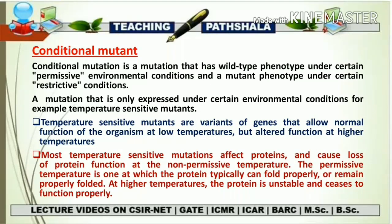Most temperature-sensitive mutations affect proteins and cause loss of protein function at the non-permissive temperature. The permissive temperature is one at which the protein can fold properly or remain properly folded. At high temperature, the protein is unstable and ceases to function properly. At high temperature, all the different proteins present in an organism are denatured, and protein is one of the most essential things required for proper functioning of the body. The best example of conditional mutants is temperature-sensitive mutants.